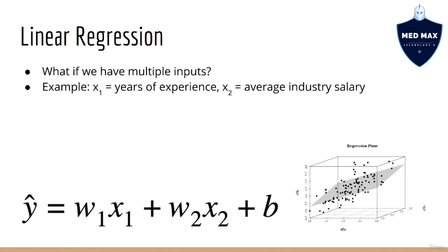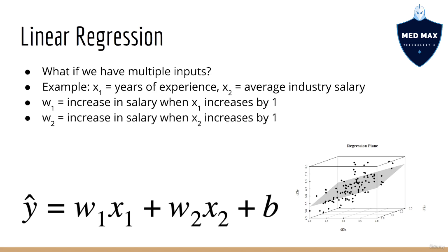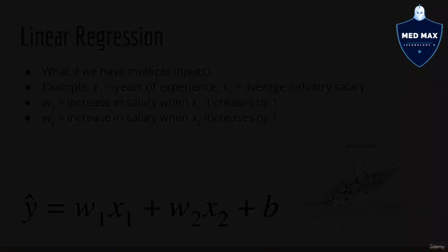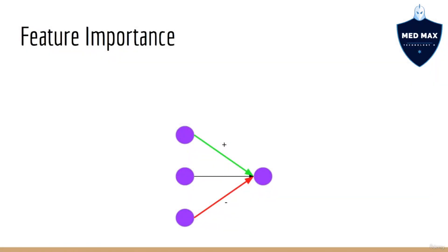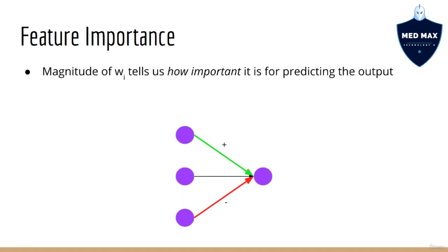The interpretation is the same as what we saw previously. w1 is the increase in salary when x1 increases by 1. w2 is the increase in salary when x2 increases by 1. b is the salary when both x1 and x2 are 0. Another way to think of the weights is that they tell us how important each input is to predicting the output. Imagine the extreme scenario where we have some w_i equals 0. In this case, it doesn't matter how much we increase or decrease x_i — the output will not change at all. So x_i has no influence on the output; that's another way of saying x_i is irrelevant.